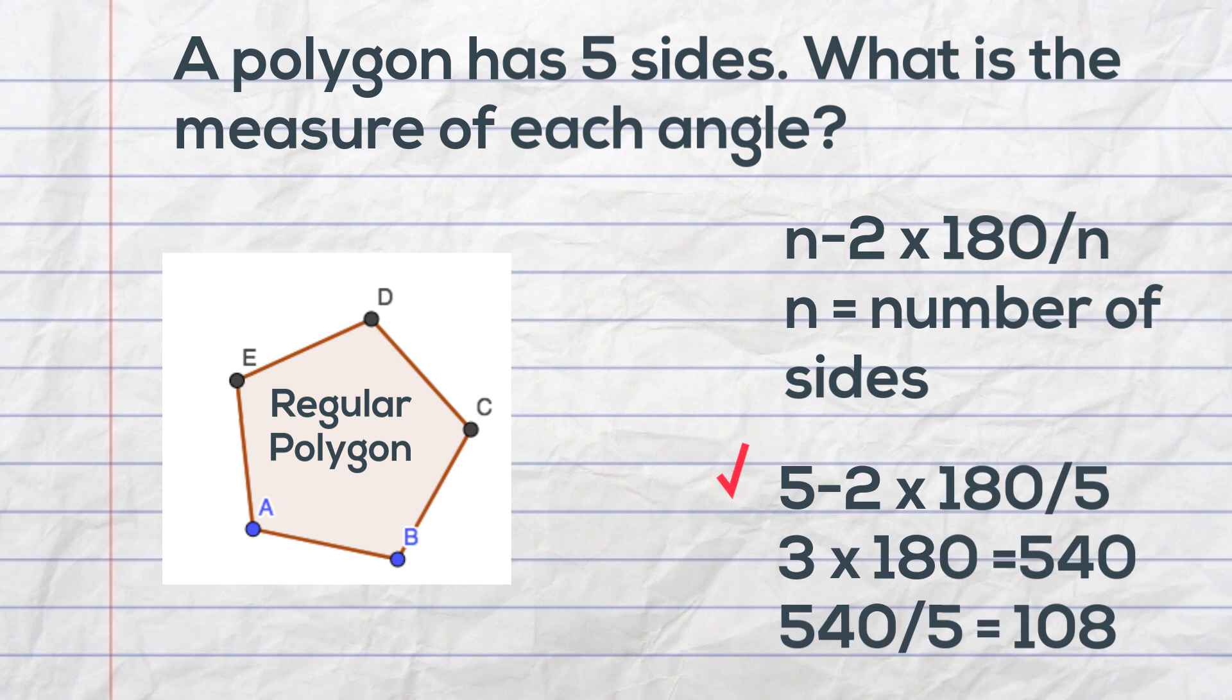So we have 5 minus 2 because it has 5 sides, which is 3. 3 times 180 is 540, and then divide this by 5 because this is the total number, and that equals 108 is the angle measure of each side.